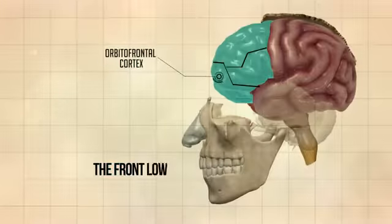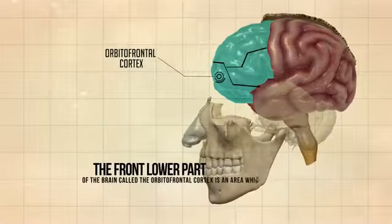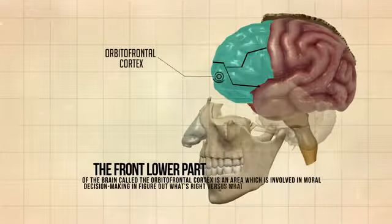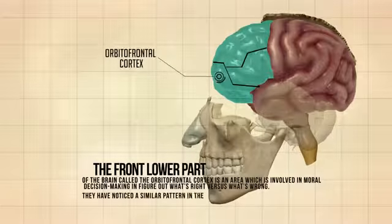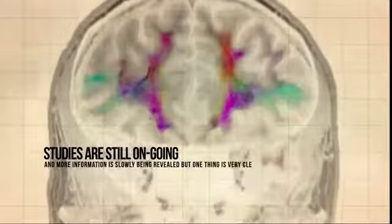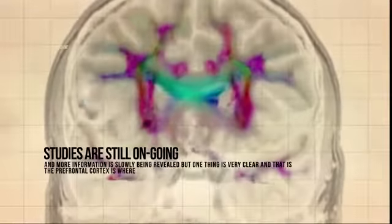The front lower part of the brain, called the orbitofrontal cortex, is an area involved in moral decision making — figuring out what's right versus what's wrong. Researchers have noticed a similar pattern in brain scans of criminals in this region. Studies are still ongoing and more information is slowly being revealed, but one thing is very clear: the prefrontal cortex is where lying and sinning takes place.